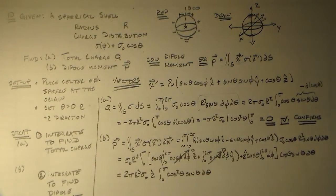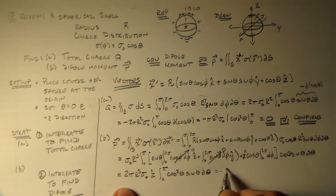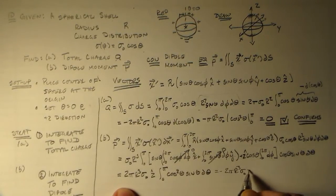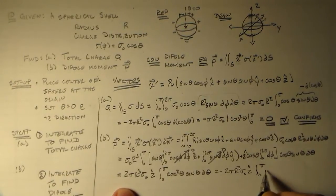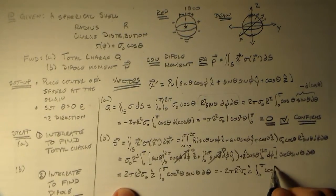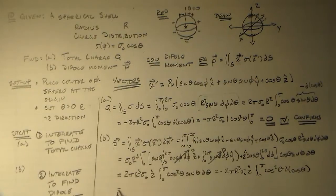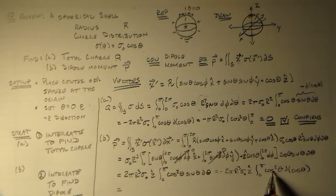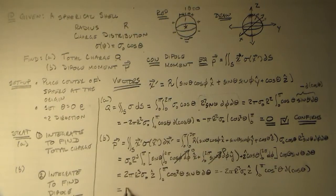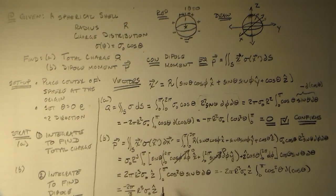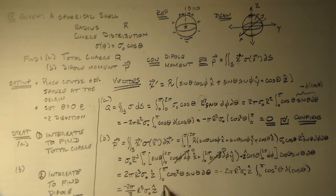And we can use the exact same thing that we used before. So we end up with minus 2 pi r cubed sigma naught z hat integral from 0 to pi cosine squared theta d cosine theta. So when we do this integral we get 1 third cosine cubed theta. So we have minus 2 pi over 3 r cubed sigma naught z hat times whatever we got left over which was the cosine cubed theta 0 to pi.